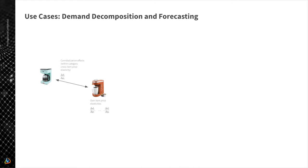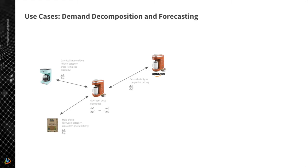There can also be dependencies between related products — for example, coffee machine prices can influence demand for coffee filters. We need to measure cross-elasticity for competitor pricing as well. We also need to track temporal dependencies within a single time series: if a product is put on discount during holiday season, people may buy more and stockpile, negatively impacting future demand — a pull-forward effect.